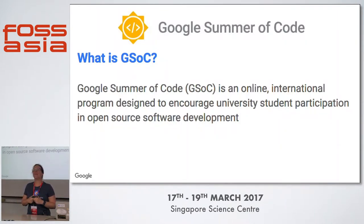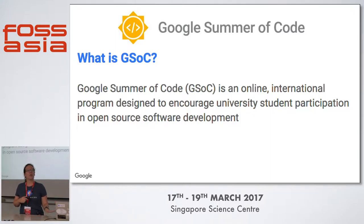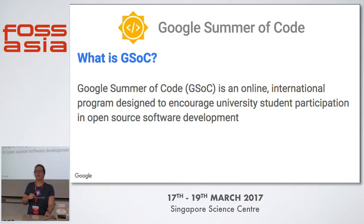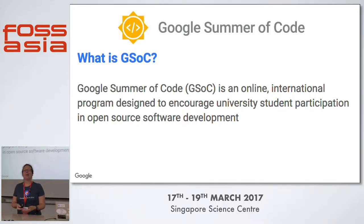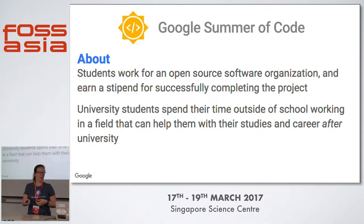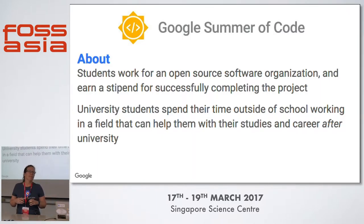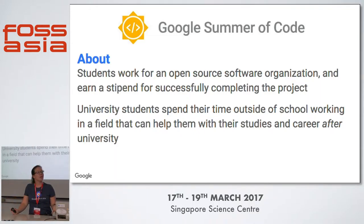I'm going to briefly go over what GSOC is — Google Summer of Code. I'll be around all weekend if you have questions. GSOC is for university students. You work on one large coding project for three months, basically from the end of May to the end of August, and you earn a stipend. Stipends are based on the country where you live — here in Singapore it's $4,200 US dollars if you successfully complete the program. Just like GCI, this is designed to bring new contributors into open source and gives you real-world experience.